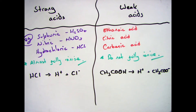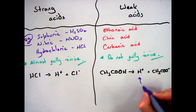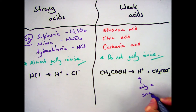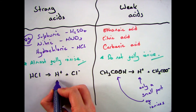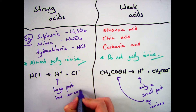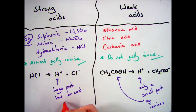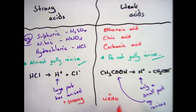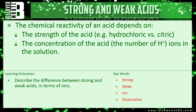Weak acids, like ethanoic acid as you can see here, because only a small part of it ionises, you have in general a lower concentration. Now it's important to note that the chemical properties and reactivity of an acid depend on both the type of acid — so how strong or weak it is — and the concentration of the acid.